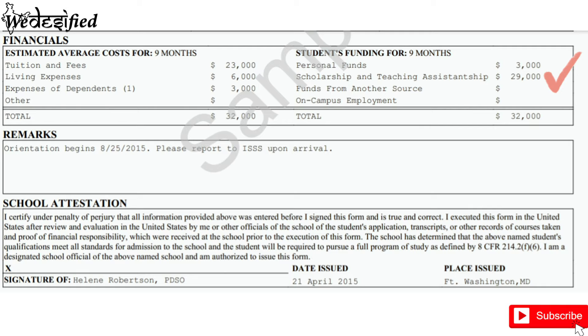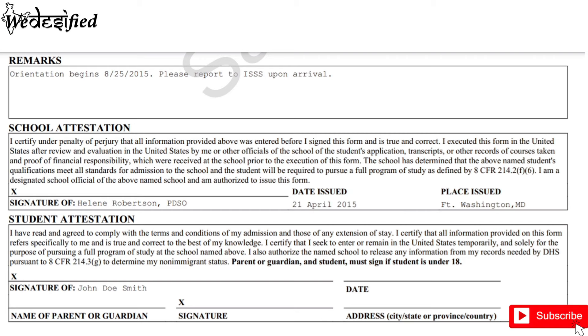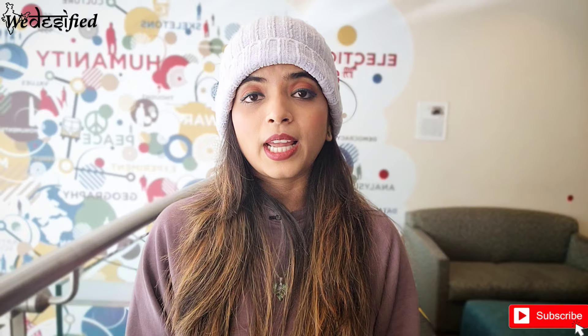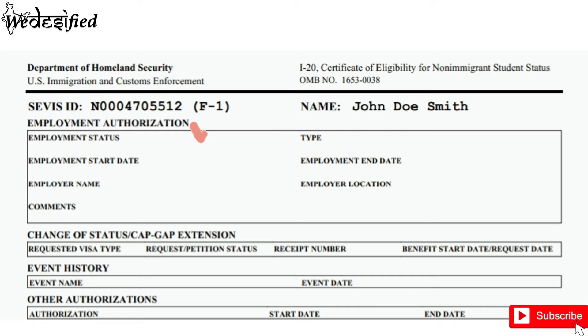The next section is for the attestation from the school, and the last section is for your signature. After verifying all the above information, you have to get the parent or guardian signature only if you are below 18. Many people get it signed without noticing — it's not a big mistake, but avoid it. If you're a Bachelor's student under 18, you should get it signed; otherwise, just leave it blank. You have to sign the I-20 before you appear for the visa interview.